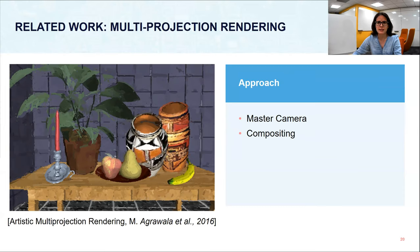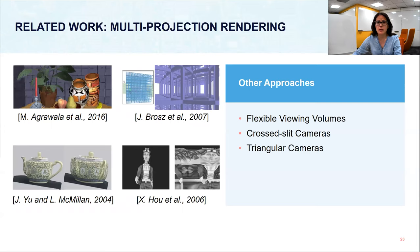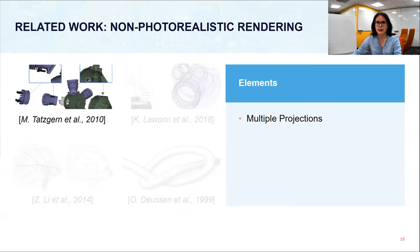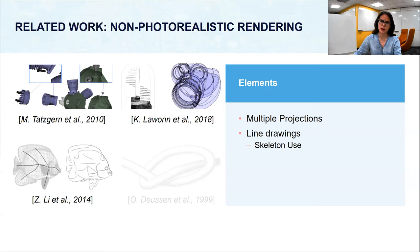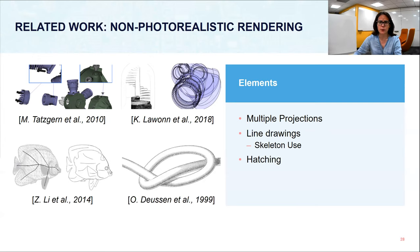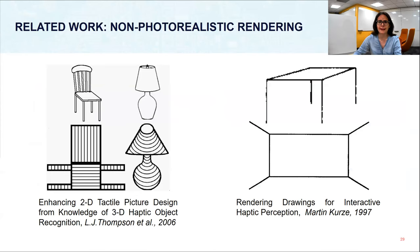The way we design the image follows an approach similar to Agravalla et al., in which one master camera helps combine multiple views into one — a step called compositing. Other ways to design images with large angular view include flexible viewing volumes, cross-flip cameras, or triangular cameras, but these make objects appear distorted. Non-photorealistic rendering approaches also use lines, improve lines using skeleton information, or use hatching to indicate curvature. We make use of all of these elements, but in contrast to earlier work, our images are tactile.